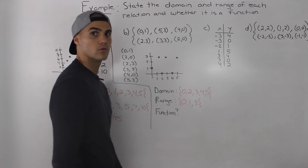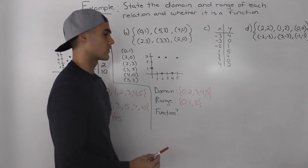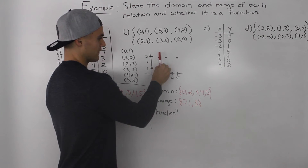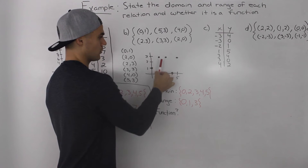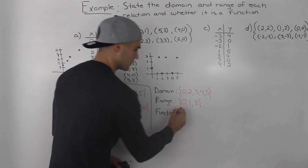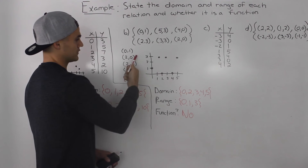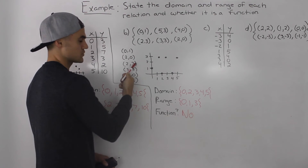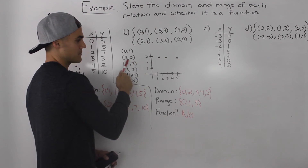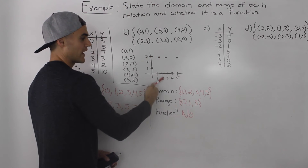Is this relation a function? We apply the vertical line test, and right there it fails — the vertical line is touching two points at the same time. Because it fails at just one point, at an x value of 2, we know it's not a function. You can also tell from the coordinates: (2,0) and (2,3) show multiple y values — 0 and 3 — for the same x value of 2, so it's not a function.